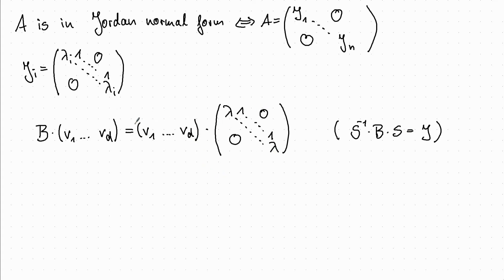So by looking at how we multiply this and this and this and this, we can see that the first vector, V1, has to be an eigenvector. Since this is just the condition B times V1 equals V1 times lambda.